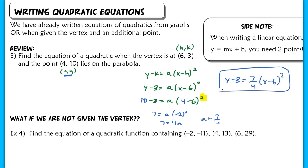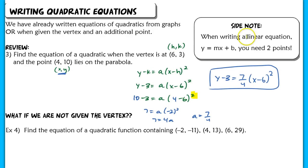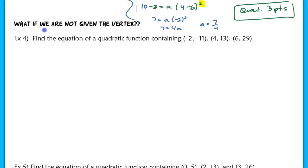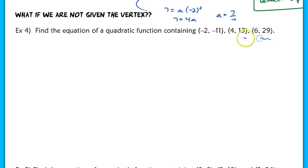If we're not given the vertex, the problem requires a different approach. We need at least 3 points to find the equation of a quadratic. As a side note: a linear equation in y = mx + b form needs 2 points, and a quadratic needs 3 points — any 3 points on the parabola — unless one of those 2 points is the vertex. Without the vertex, we must use standard form: y = ax² + bx + c.